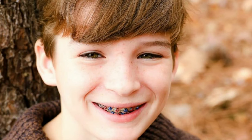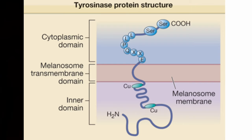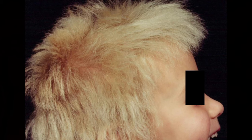In vitiligo, melanocytes are totally destroyed. In phenylketonuria, the conversion of phenylalanine to tyrosine does not take place, causing pigmentary dilution. In Menkes (kinky hair) disease, there is a problem with copper transportation, so copper does not reach the tyrosinase enzyme, again resulting in pigment dilution.